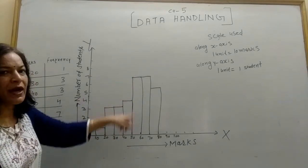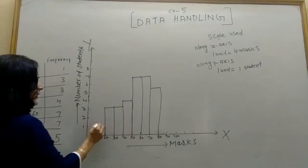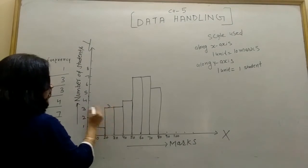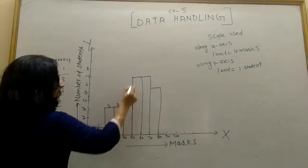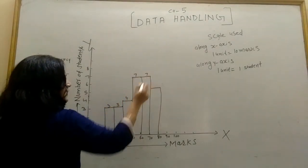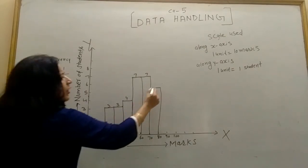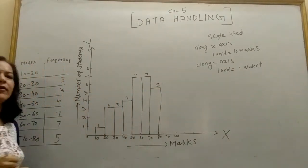And the height of these bars represents the frequency: one, then three, three, four, seven, seven, and five.